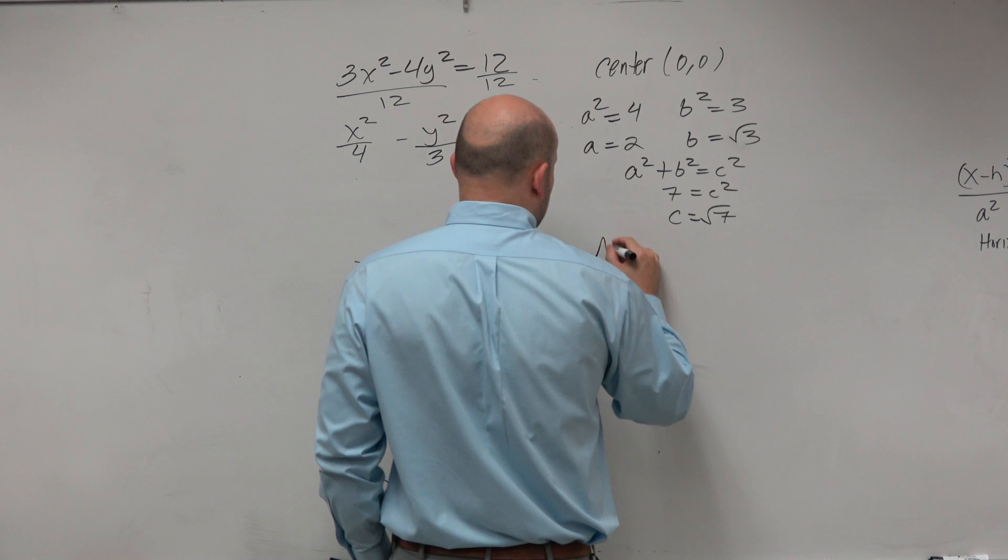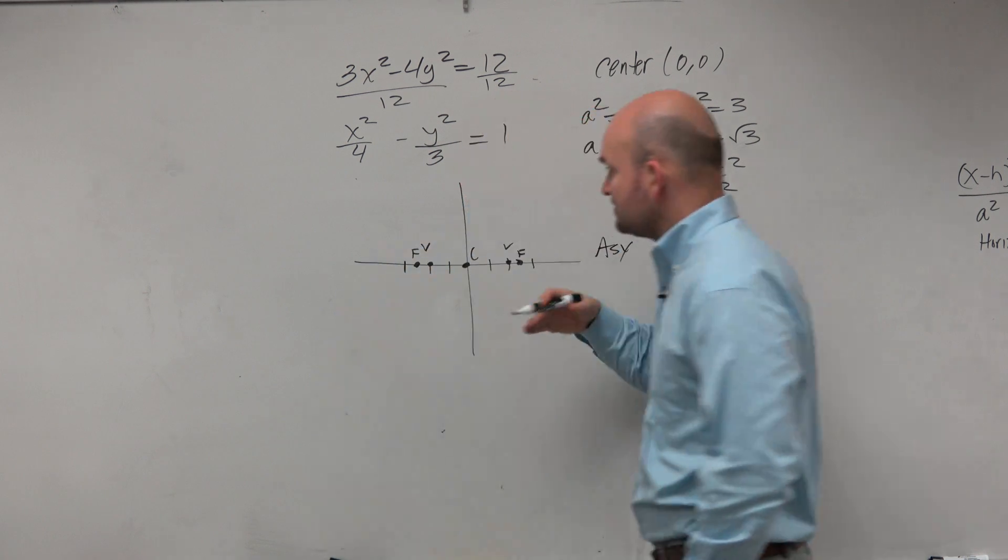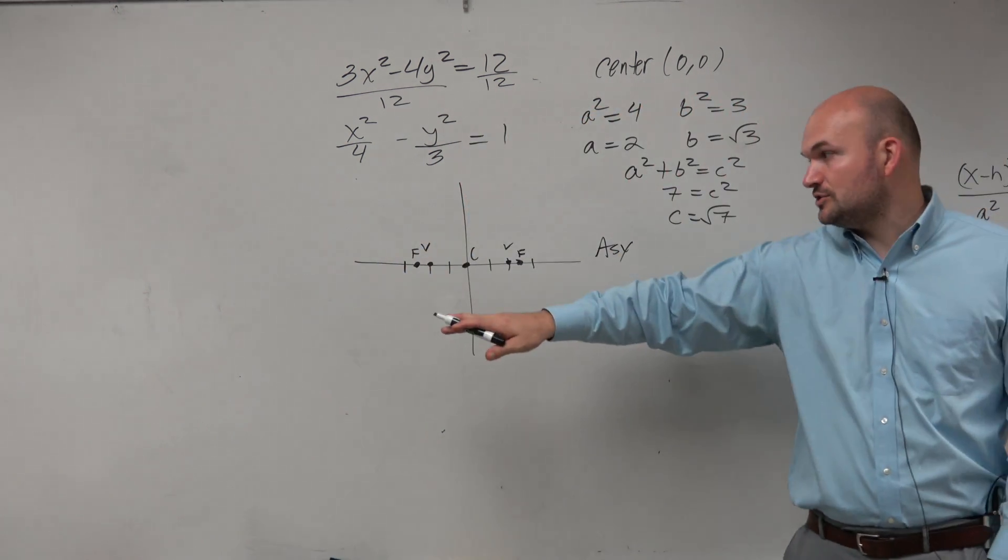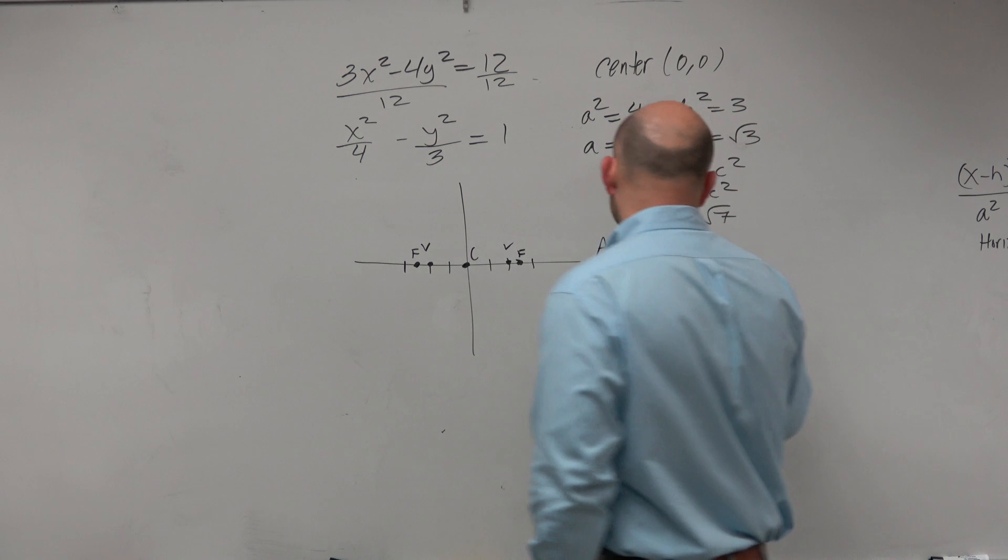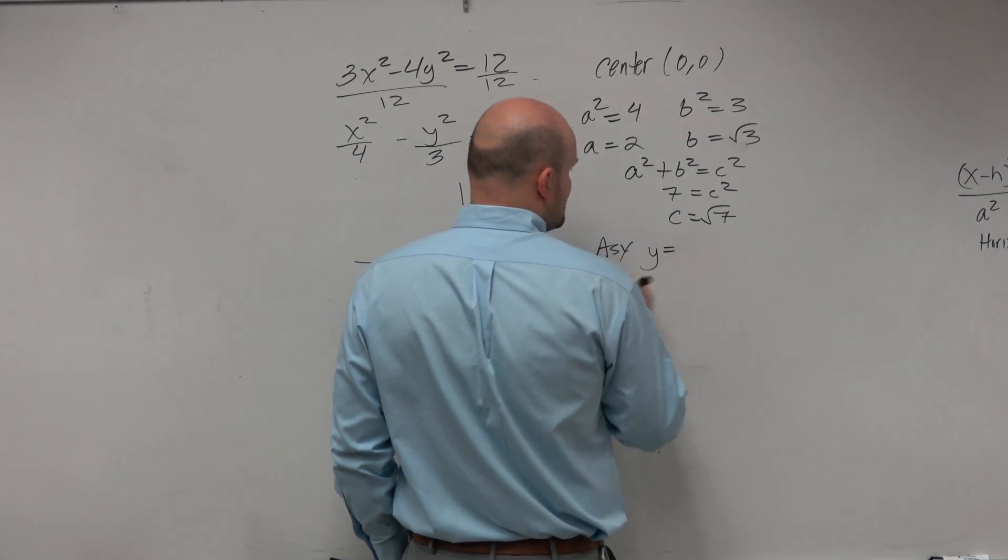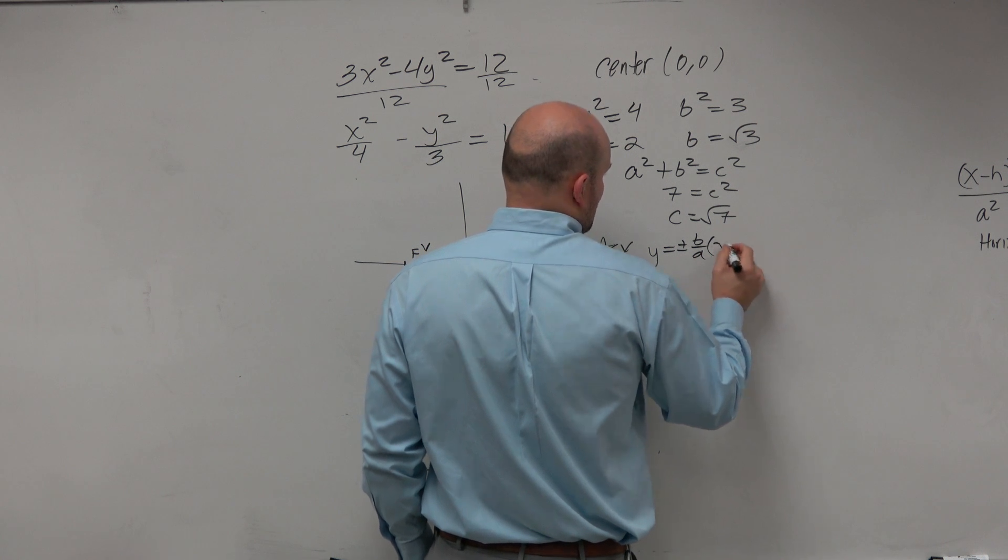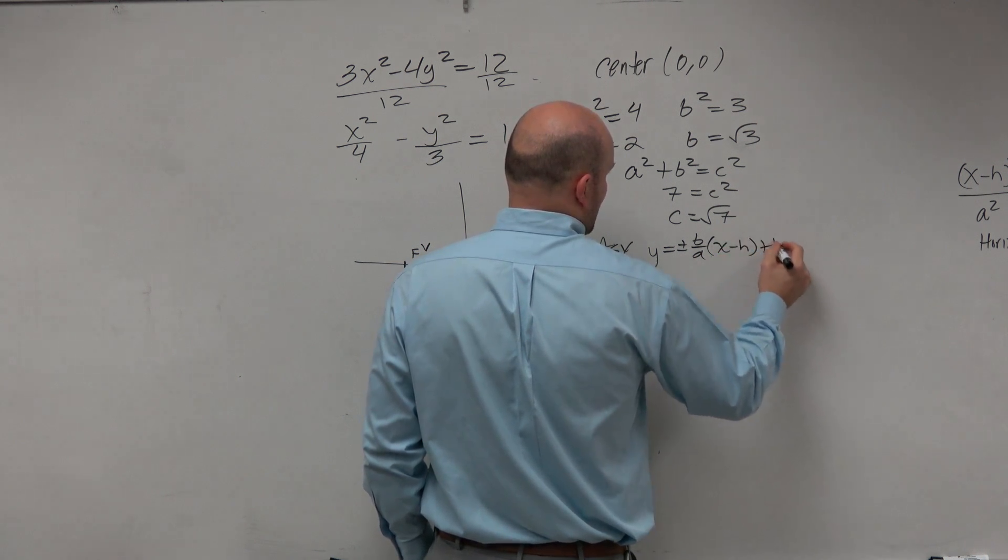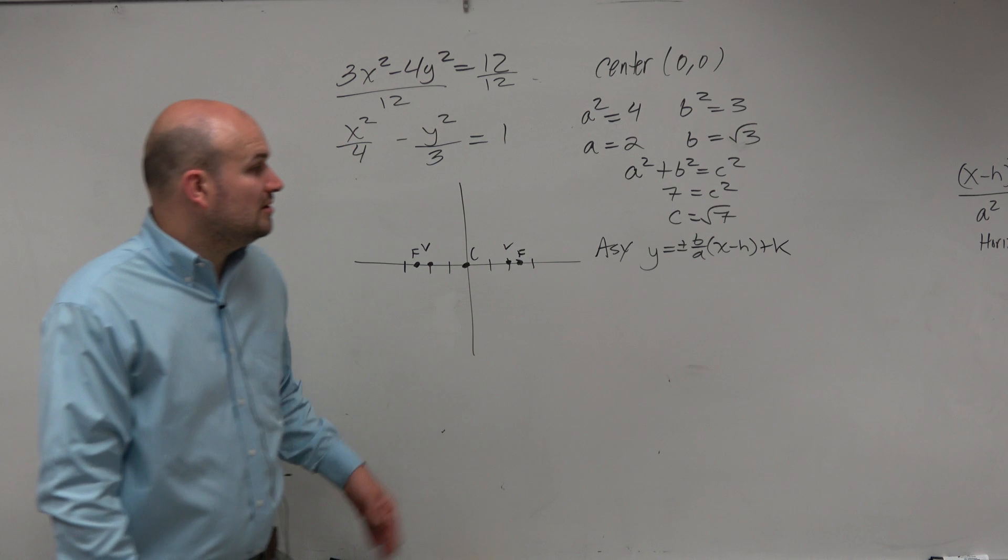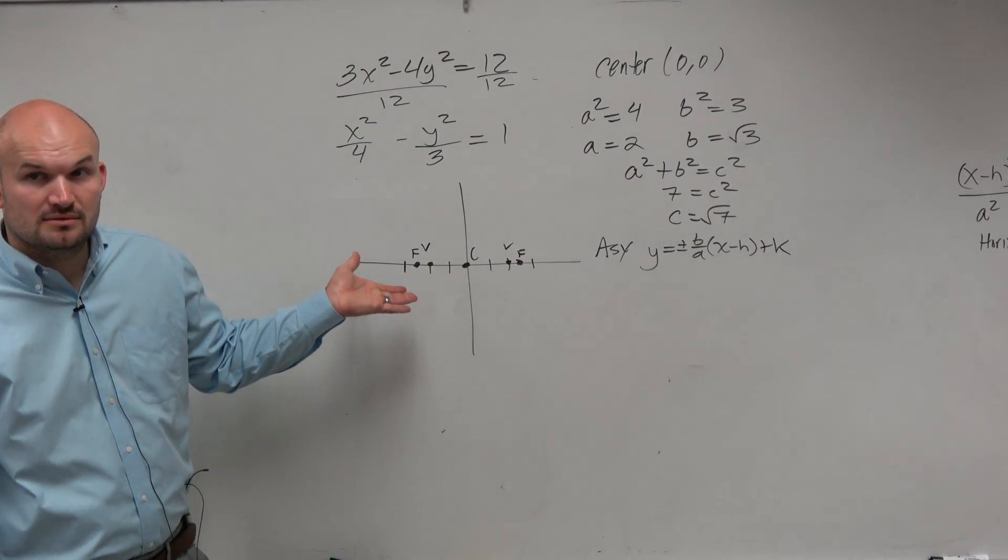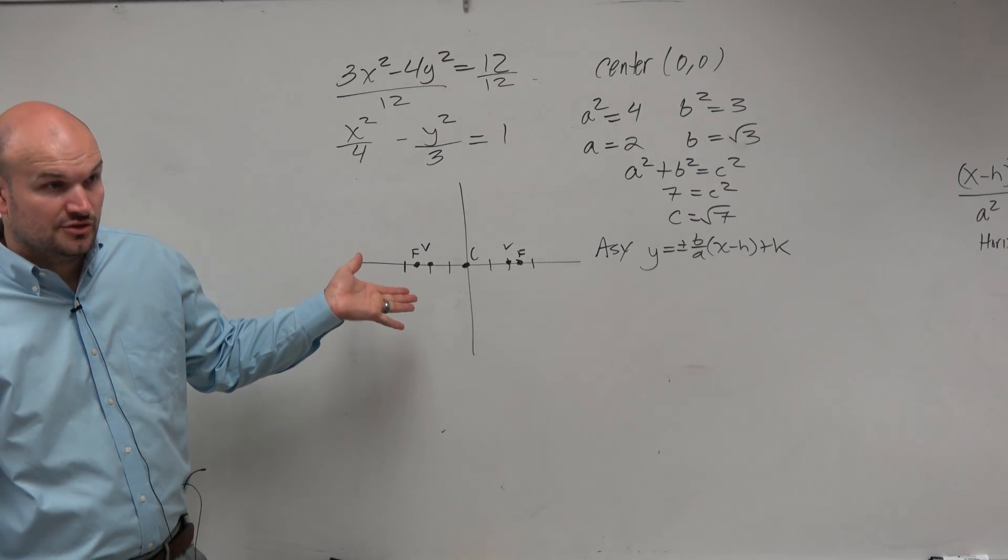So another question that we could ask for this is identify the asymptotes. Now, this is a horizontal transverse axis. So based on your notes, the equation for the asymptote is opposite of b over a times x minus h plus k. Well, do I already have b over a?